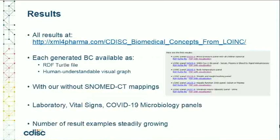You can find all the results generated so far at this website — the number is still growing. Each result is available in RDF Turtle format as well as a PDF with a human-understandable visual graph. You can take the Turtle file and use your own visualization software. Some of the results come with SNOMED CT codings, which is especially important when generating CDISC datasets starting from electronic health records. You will find results for lab tests, vital signs, and COVID-19 microbiology panels and tests.